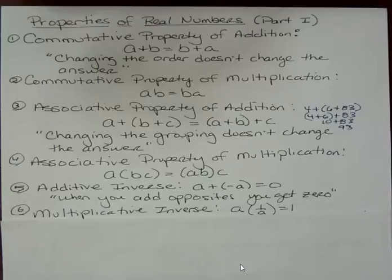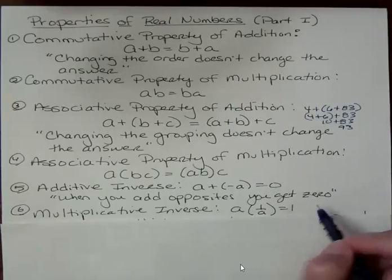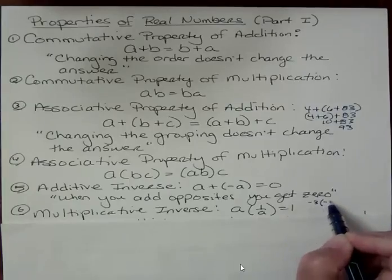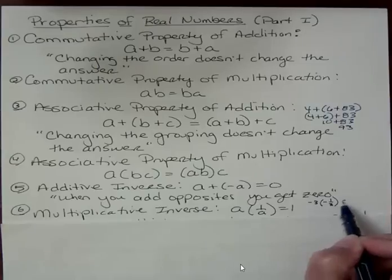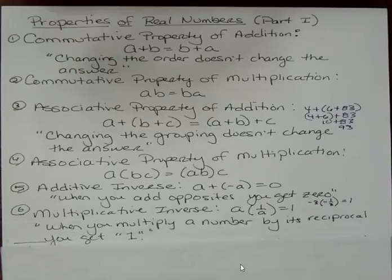The multiplicative inverse says that if you have a number and you multiply it by its reciprocal, that is A times 1 over A, you get positive 1. Even if you were to have a negative 3, the reciprocal of negative 3 is negative 1 third. What is negative 3 times negative 1 third? It's positive 1. Every time you multiply something by its reciprocal, you always get a positive 1. When you multiply a number by its reciprocal, you get 1.